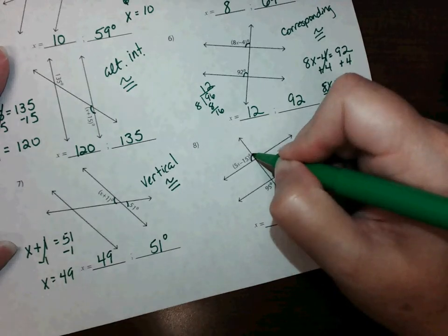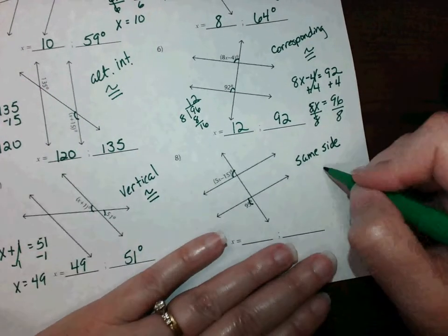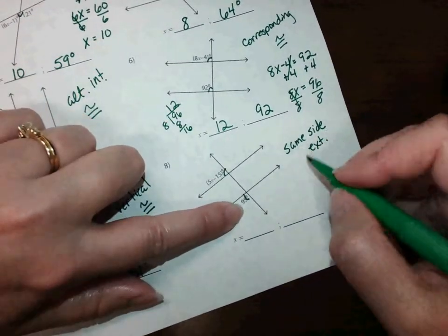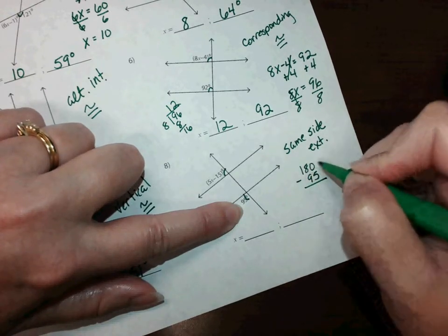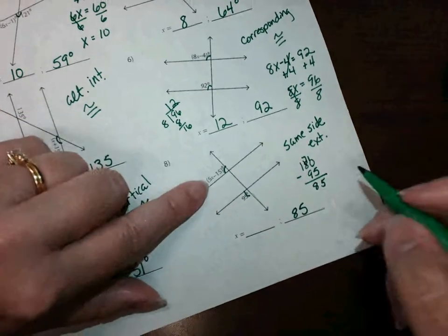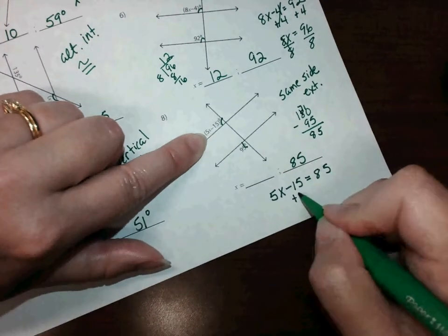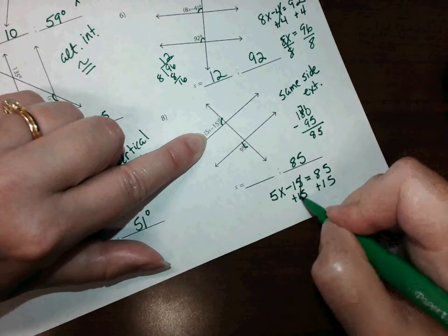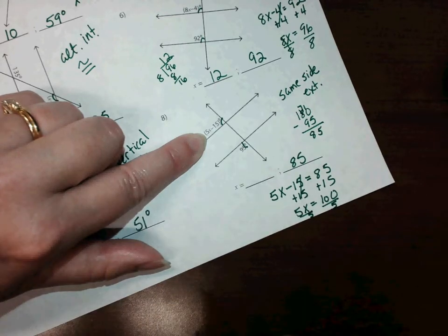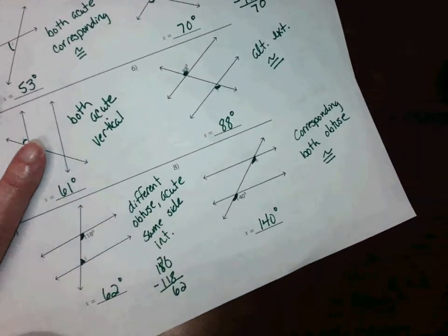The last one: this angle and this angle are same-side exterior — they are not congruent, they add up to 180 degrees. So if this one is 95, the other one is 85. So 5x minus 15 has to equal 85 degrees. Add 15: 5x equals 100. Divide both sides by 5 — x equals 20. That's it for this lesson.